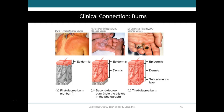A second degree burn destroys the epidermis and part of the dermis, causing some loss of skin function. Redness, blister formation, edema, and pain typically result. A blister occurs when the epidermis separates from the dermis, allowing an accumulation of extracellular fluid between the layers. Associated structures such as hair follicles and sebaceous and sweat glands are usually not injured. As long as the blister is not popped, there is a low chance of infection, and skin grafting is usually not required. Healing tends to occur in about three to four weeks, though scarring may or may not result.